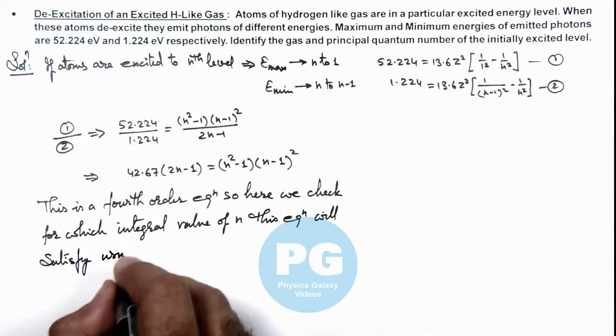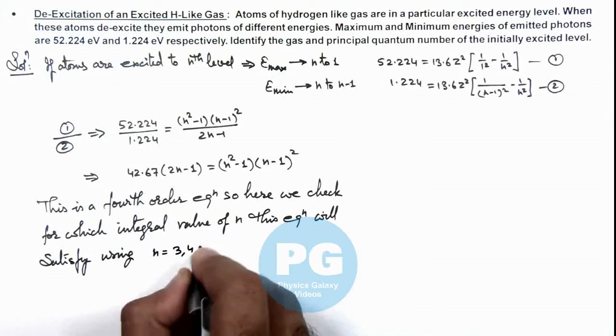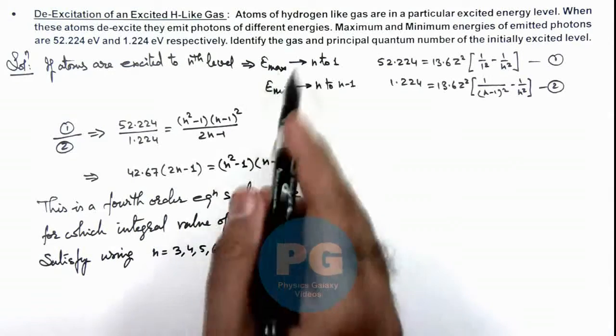Using n = 3, 4, 5, 6, and so on. We cannot take n = 2, otherwise maximum and minimum energy would become equal.